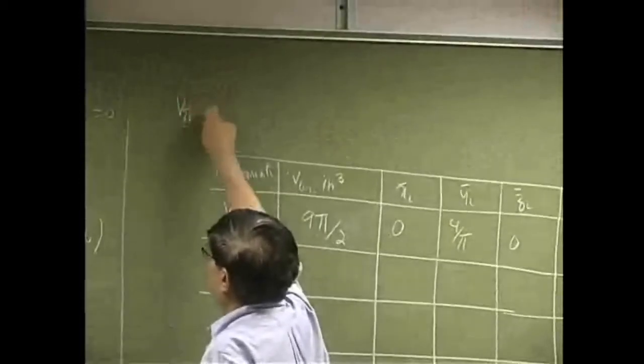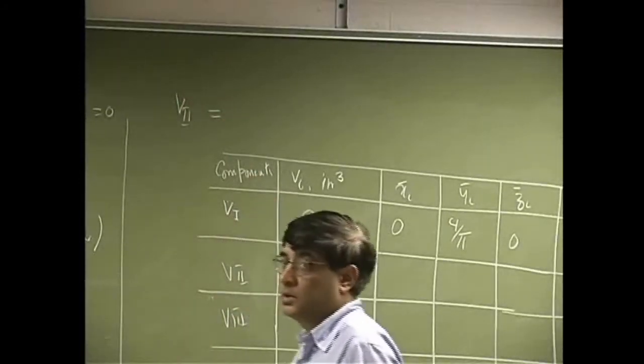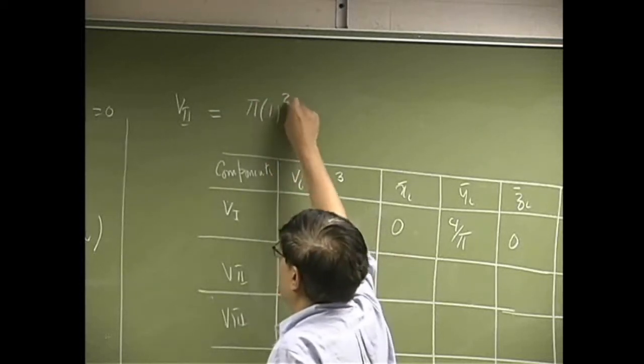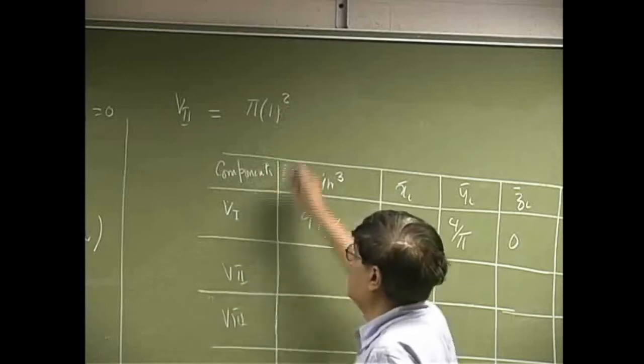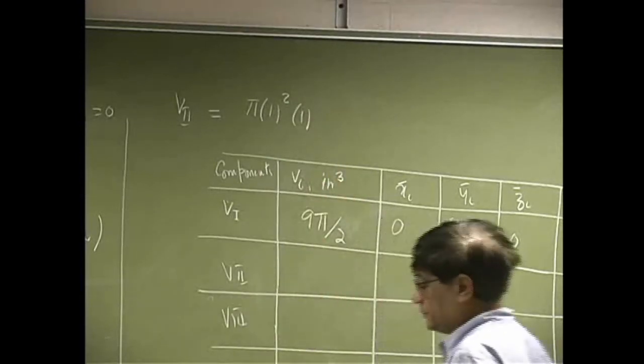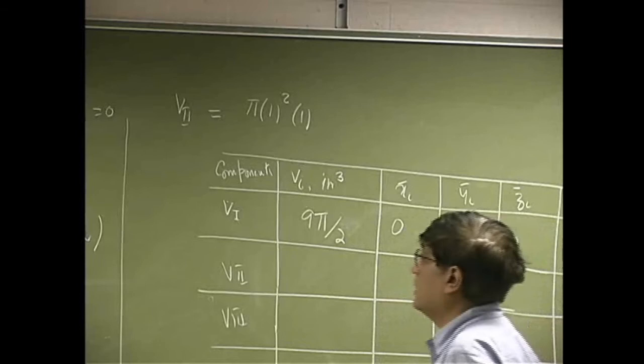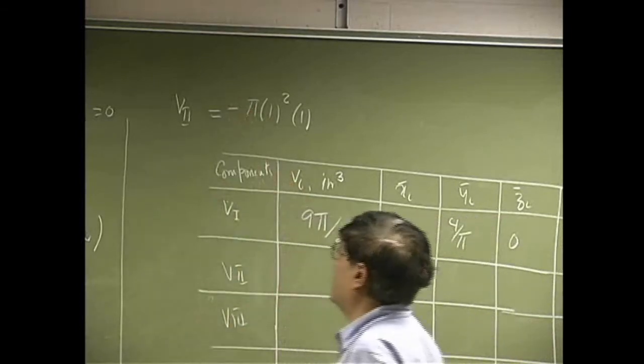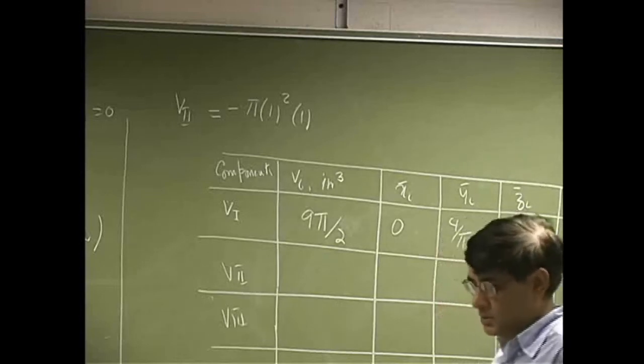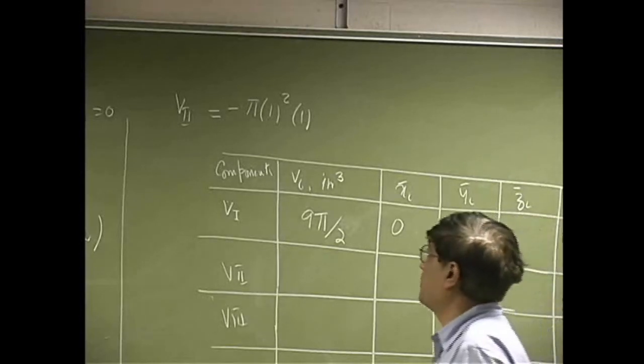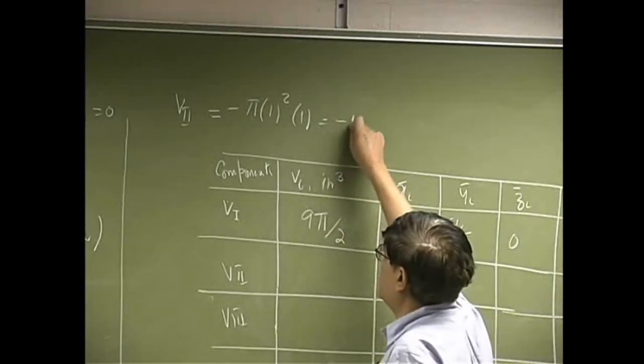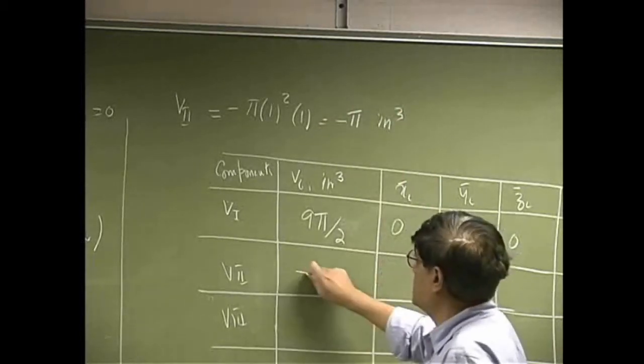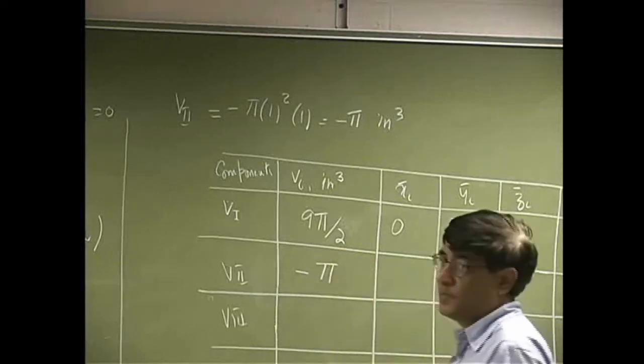The second one is a hole. The area is π times radius, which is 1, squared. We can multiply this by 1, except that's a hole, so it has to be a negative volume. So since it's a negative volume, this comes out to be negative π inch cubed. So you place this as negative π.